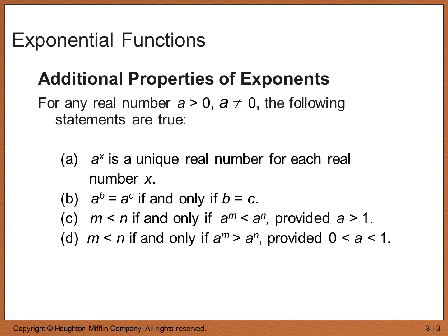If you have the same base a and your exponent m is less than n, then a to the m is going to be less than a to the n, assuming your base is greater than 1. Finally, if your base is between 0 and 1 and exponent m is less than n, then a to the m is going to be greater than a to the n. We'll look at a few examples of those in a moment.